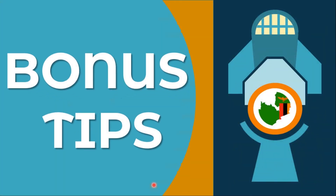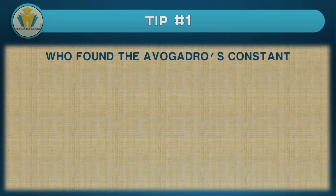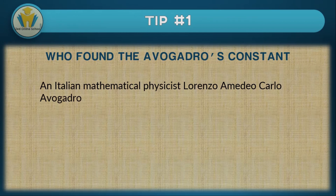You have finally reached the bonus tips section. In today's video, we've got three tips for you. The first is about the person who found Avogadro's constant. He was an Italian mathematical physicist and his name was Lorenzo Amedeo Carlo Avogadro. And as you can see, this number was named after him.